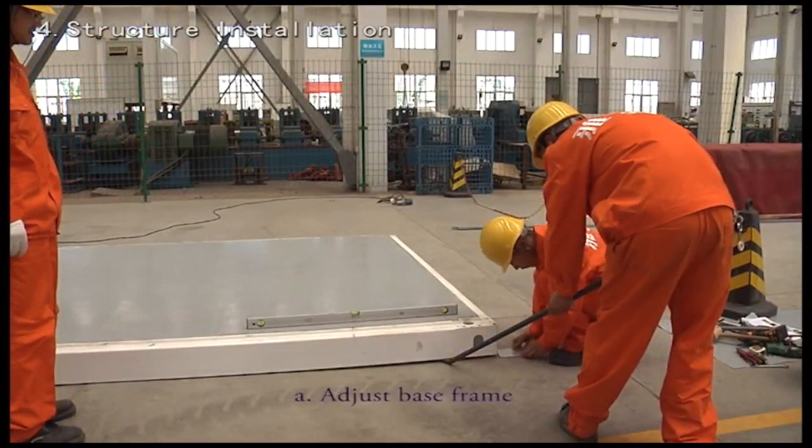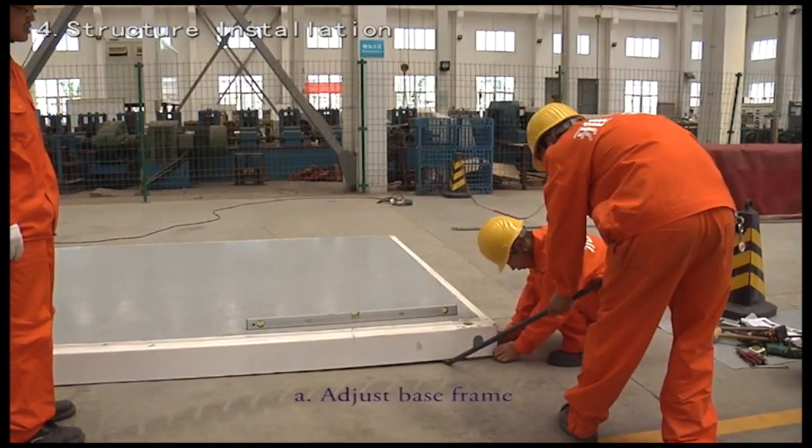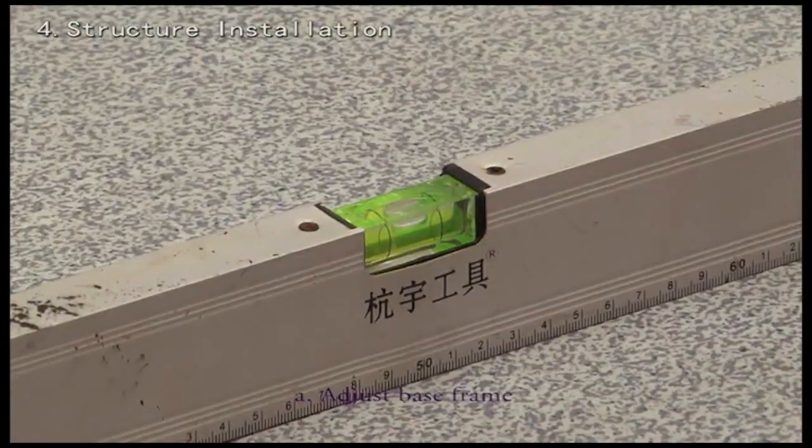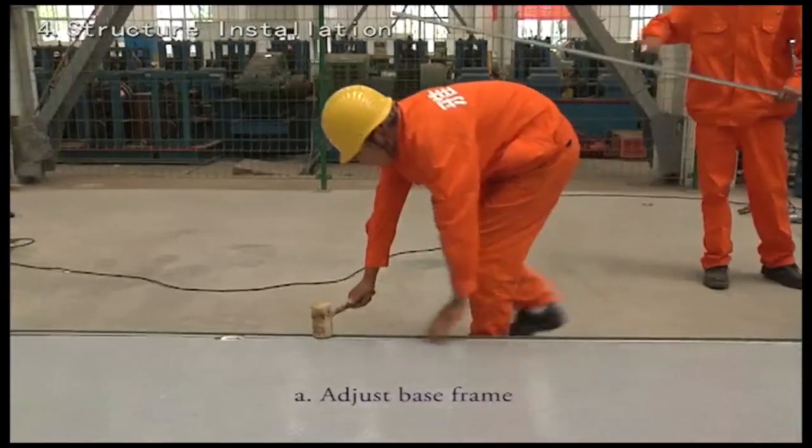Adjust the base frame. Position the base frame in the level assembly area with spirit level. Then install slide rail.